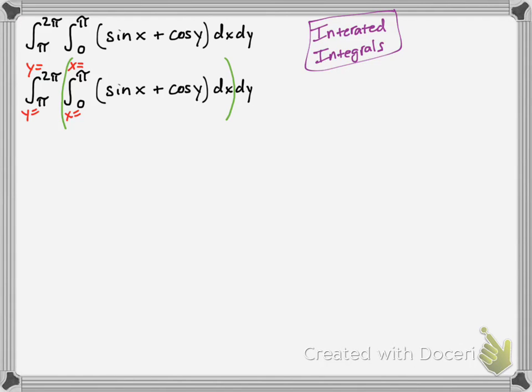So you evaluate that integral on the inside, treat it as a separate integral problem. And the anti-derivative of sine x would be negative cosine x, and you treat y, anything with y as a constant. So pretend cosine y is just like the number 2, and then you would have 2x. So that's kind of how it goes there.